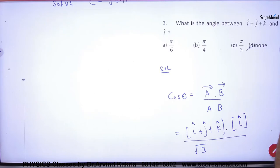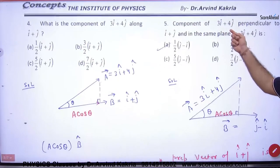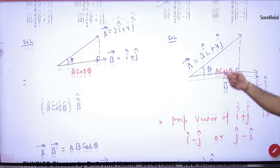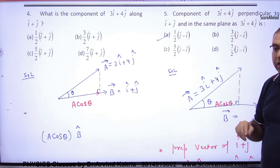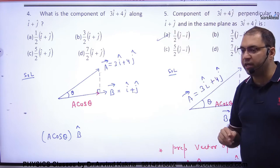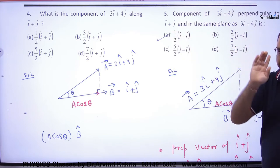Question number 3, question number 4, question number 5. Component of 3i cap plus 4j cap. So this is a vector given. This is a component which is perpendicular to i cap plus j cap. This is the second vector: i cap plus j cap. I will take a component which is perpendicular. First, i cap plus j cap perpendicular.